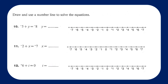Problem number 10: I'm going to start at the integer negative 5 and I want to land on the integer negative 8. I'm going to decrease my number by 1, 2, 3 units to the left — so that's negative 3. Negative 5 plus negative 3 equals negative 8.